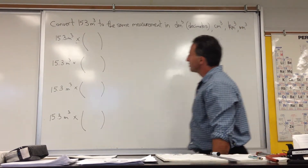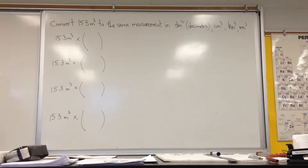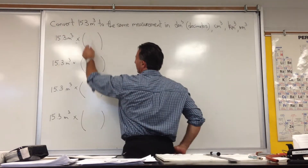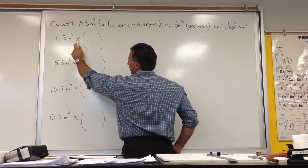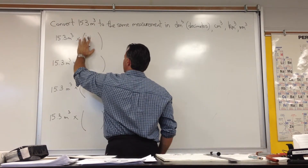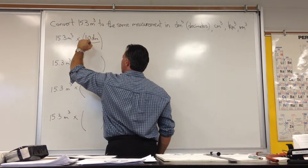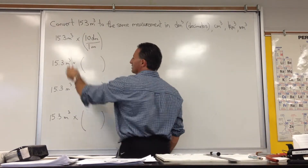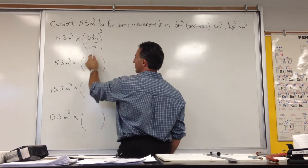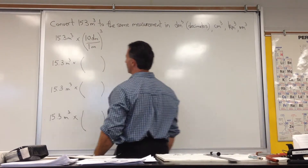In the first case, we have decimeters cubed. We realize that one meter has 10 decimeters, so we have to write a conversion factor. We're looking to eliminate meters cubed, so we're going to write 10 decimeters per 1 meter. Because it's a volume measurement, we're going to raise this to the power 3 so that we have meters cubed. If you raise this to the power 3, you have to raise everything else in there to the power 3.